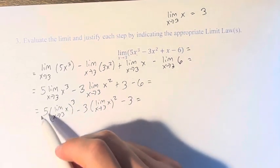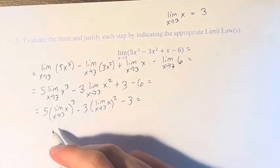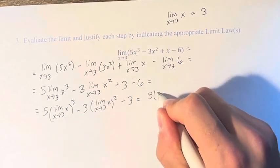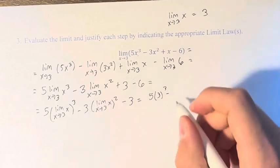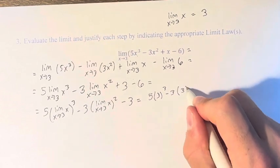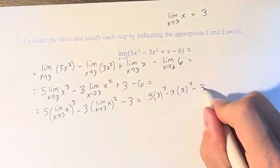So this is equal to, well, the limit of x is just 3, so 5 times 3 cubed minus 3 times 3 squared minus 3.